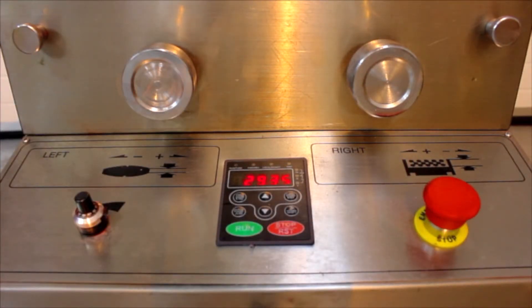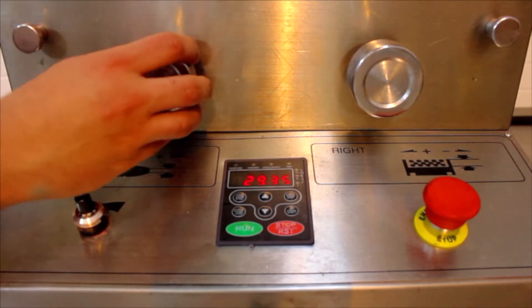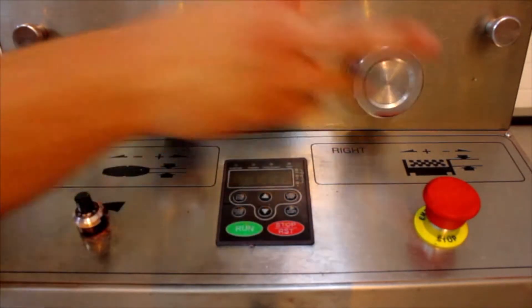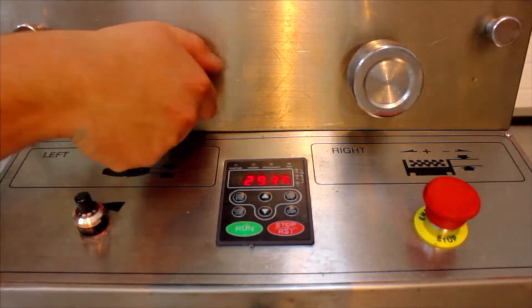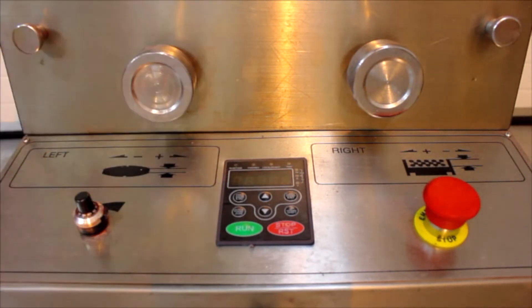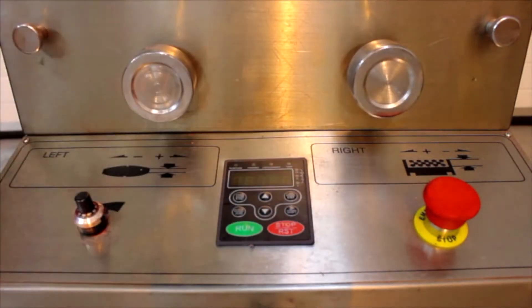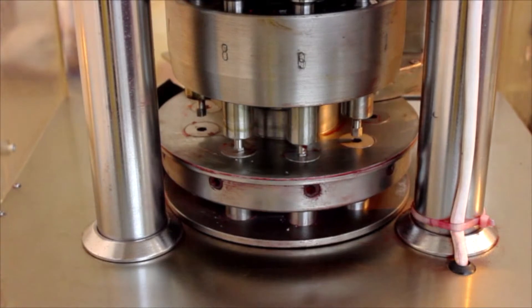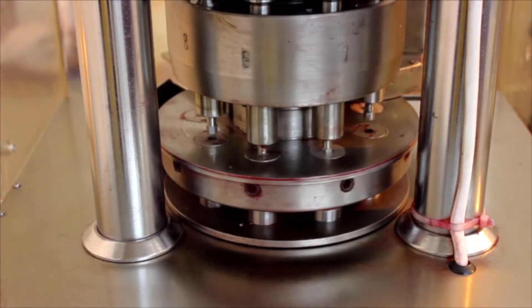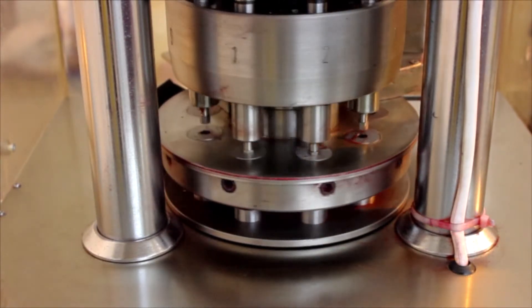The punch pressure and the fill depth on the RTP 9 are controlled through two knobs on the front section. Simple adjustment of these is achievable, making it a very user friendly machine. Here you can see the RTP 9 being adjusted from minimum speed up to maximum speed.